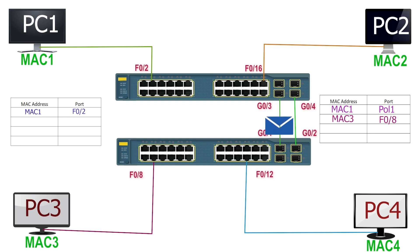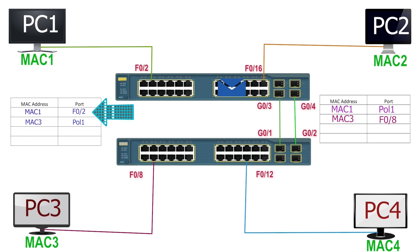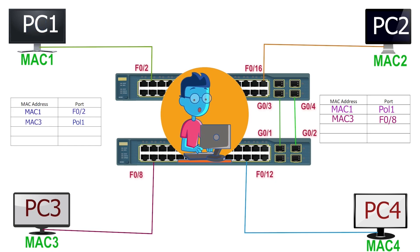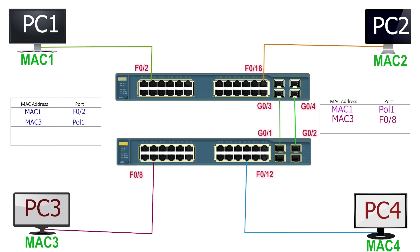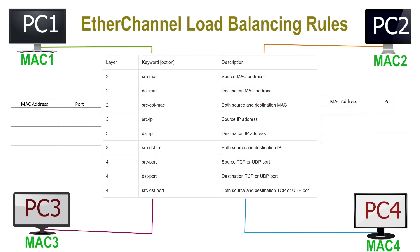Suppose Pool 1 selects G0-1 as the forwarding port. The frame reaches S1 on G0-3. Similar to S2, S1 associates MAC3 with Pool 1 rather than G0-3. Since the CAM table of S1 has an entry for MAC1, S1 forwards it from F0-2. This way, if we configure an EtherChannel, the switch uses the EtherChannel's pool number for CAM table entries, assigning the same pool number to all MAC addresses learned on any port of the pool.